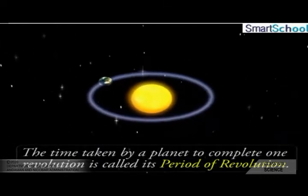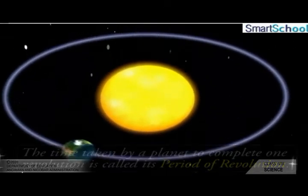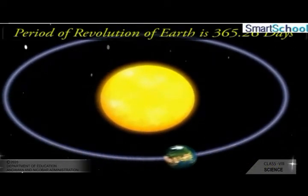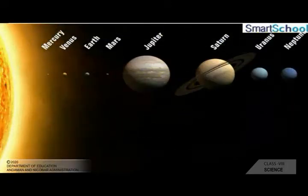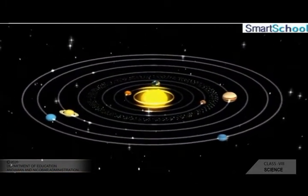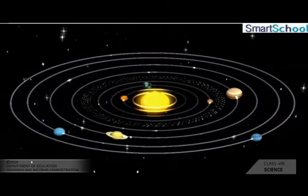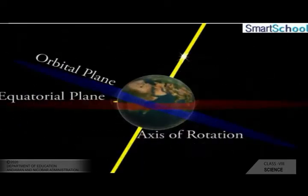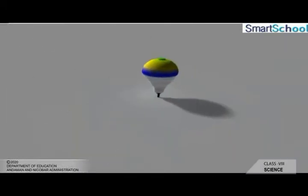The time taken by a planet to complete one revolution around the sun is called its period of revolution. The Earth takes 365.25 days to complete one revolution around the sun. The period of revolution increases as the distance of the planet from the sun increases. The axis of the Earth is inclined to its orbital plane at an angle of 65 degrees.